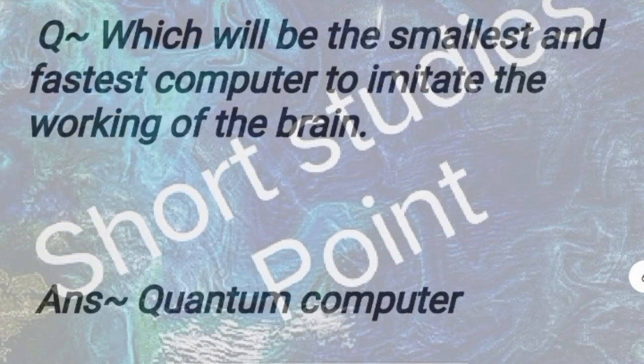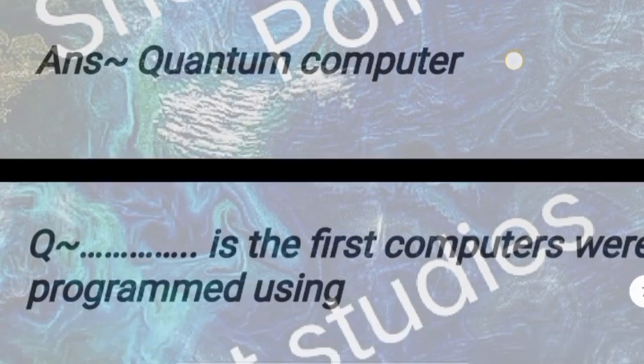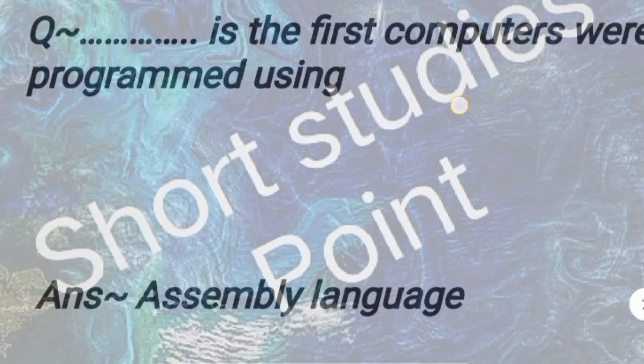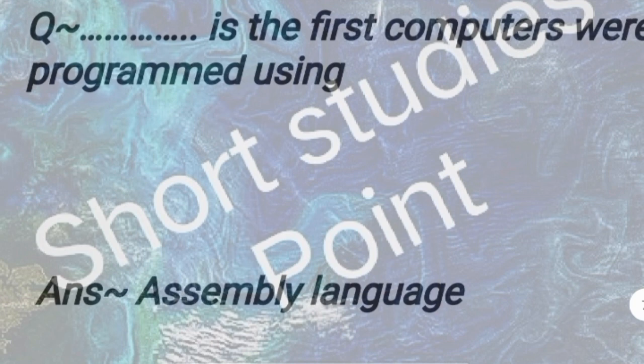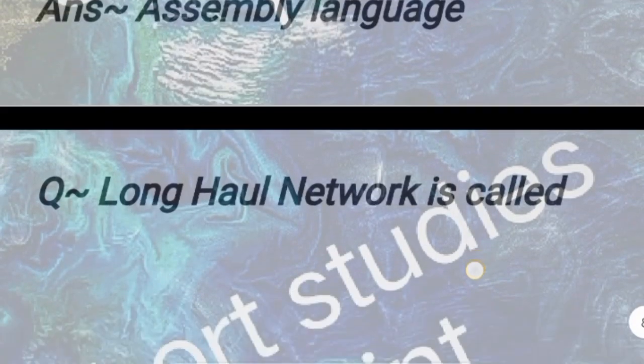Next question: Which will be the smallest and fastest computer to imitate the working of the brain? Answer: Quantum computer. Next question: The first computers were programmed using? Answer: Assembly language.